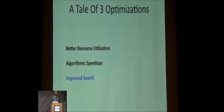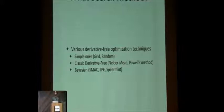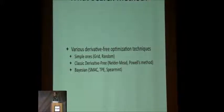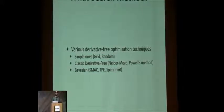For improved search, the problem of searching through hyperparameter space can be interpreted as derivative-free optimization — we want to search through some space but don't have access to the underlying function. There has been a lot of work on this: random search and grid search being the most obvious, plus classic derivative-free optimization methods that approximate derivatives, and newer Bayesian methods. We did an empirical study to see which one worked best on a handful of datasets.